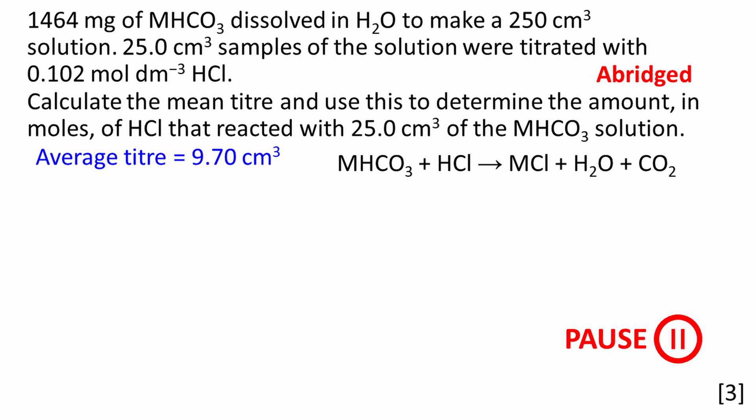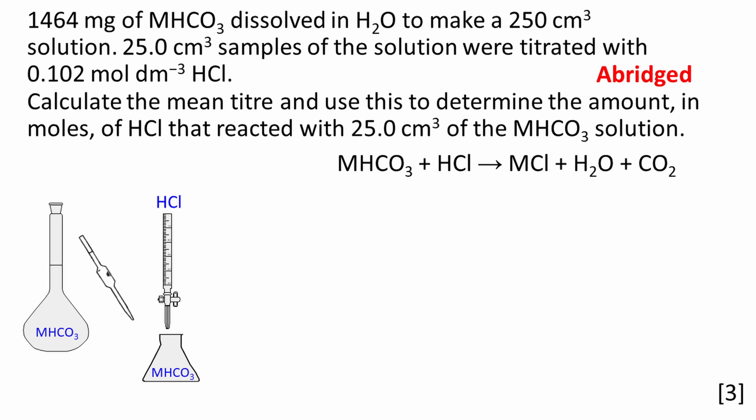Now that we have worked out the mean titer we no longer need a table of results. I've just included here the information required for the next part of the calculation. It is a good idea to draw a diagram showing the quantities and locations of the different reagents. This is sometimes referred to as a storyboard. It helps to visualize the location of each substance throughout the analysis. Hydrochloric acid is delivered to the conical flask from a burette. We are given the concentration of hydrochloric acid, 0.102 mol dm⁻³. The volume of HCl is the average titer, 9.70 cm³.